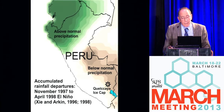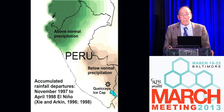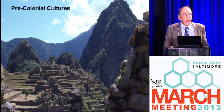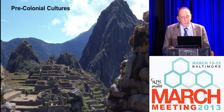Peru is also impacted greatly by El Niños. This is the 1997–98 El Niño — very wet in northern Peru and Ecuador, but very dry in the south where this ice cap is located. This area has a very long history of pre-Spanish occupation and cultures like the Incas, and we can work with archaeologists and anthropologists to look at how climate has impacted those cultures in the past.